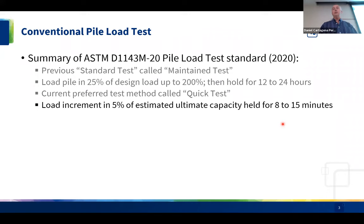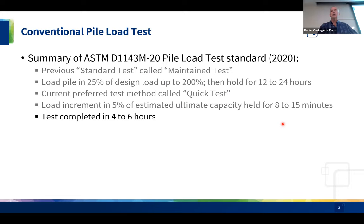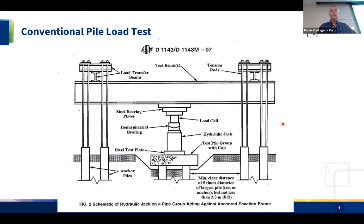The quick test applies load in 5% increments of estimated ultimate capacity — typically 20 steps — and holds each increment 8 to 15 minutes. A major advantage is the test is completed in 4 to 6 hours rather than 24 hours. These tests also typically take the pile to failure, whereas the old standard often just loaded to twice the design load, so you never knew how much additional capacity you actually had.